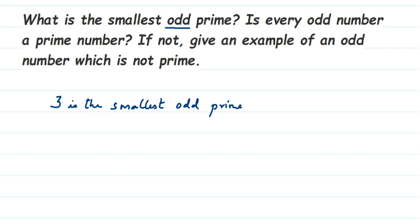The next question: is every odd number a prime number? Let's take an odd number randomly — for example, nine. Is nine a prime number? No. Prime numbers are numbers which have exactly two factors: one and the number itself. For example, three is a prime number — it has exactly two factors, one and three.